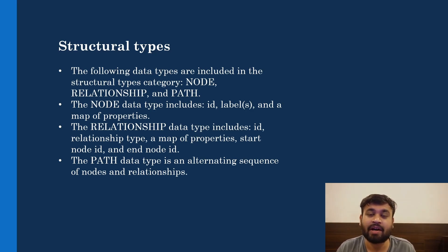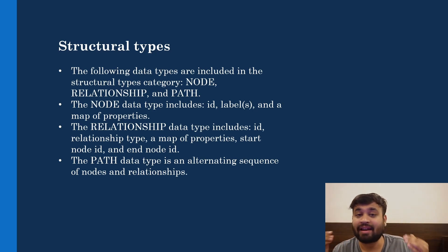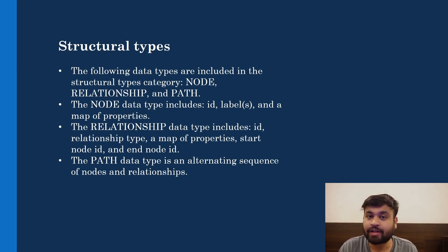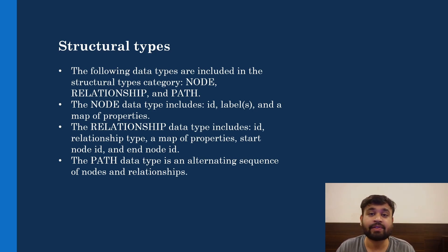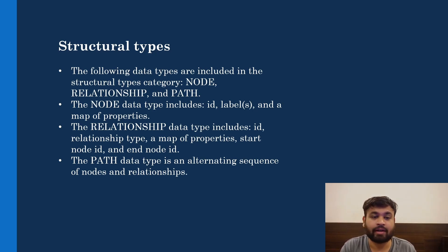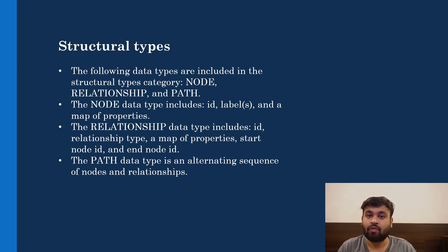The next category is structural types. Structural types are nothing but the different entities present in your graph, categorized into three categories: node, relationship, and path. The node acts as the vertices in our graph, then we have edges which are the relationships, and finally the path. These are the schema or structure of the graph, but they are also different data types in our graph.